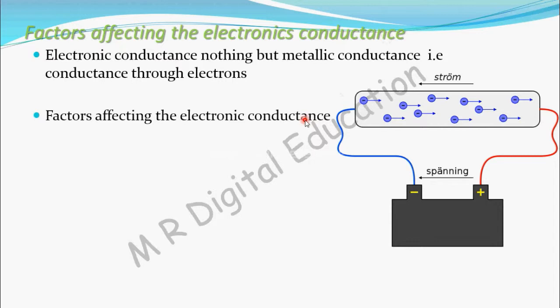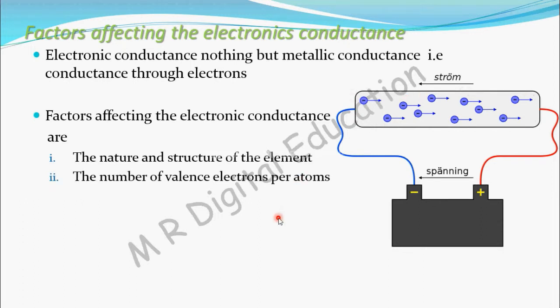Factors affecting the electronic conductance: first, the nature and structure of the element, and the number of valence electrons per atom. Valence electrons are the electrons in the outermost shell, and they are responsible for conductance. As the number of valence electrons increases, conductivity increases because there will be more electrons available.